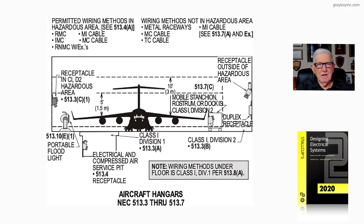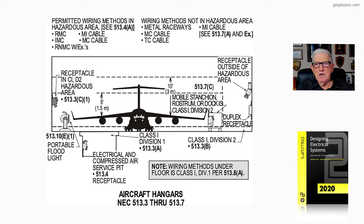Looking at the receptacles to the left inside the hangar — if you fall within the Class 1 Division 2 area, then 513.3c1 says you use a receptacle for Class 1 Division 2, so you go to 501.140 for those permitted receptacle types. For receptacles outside of that location, you can use regular duplex receptacles and regular type receptacles.